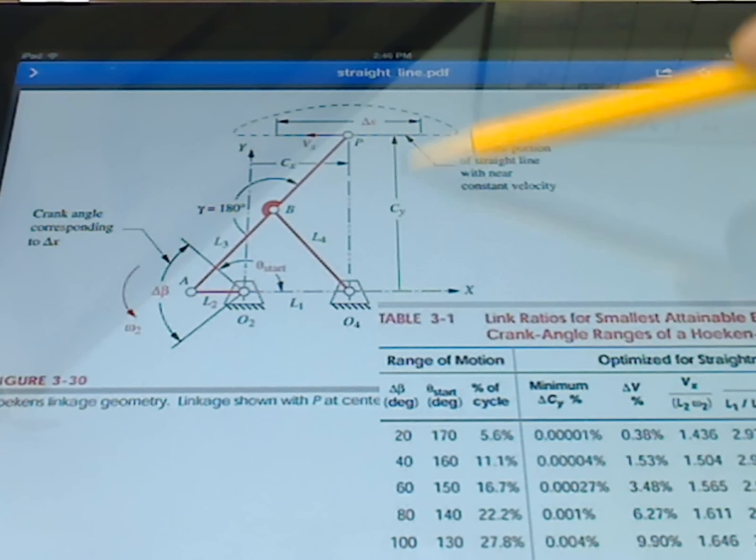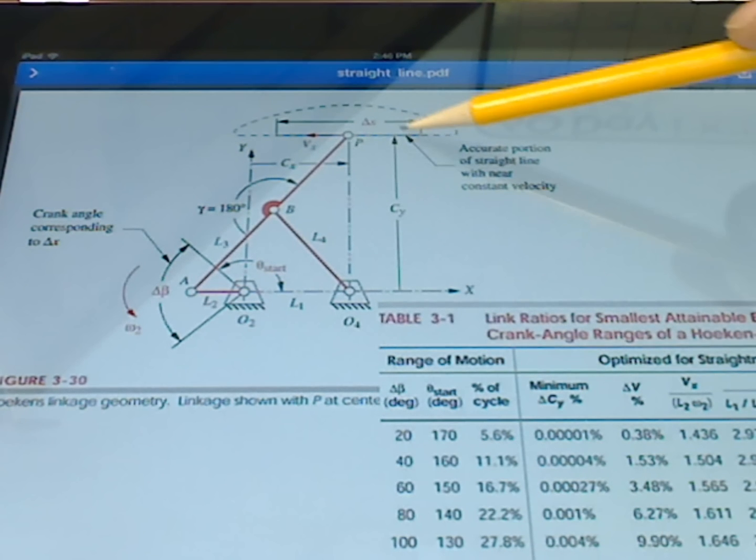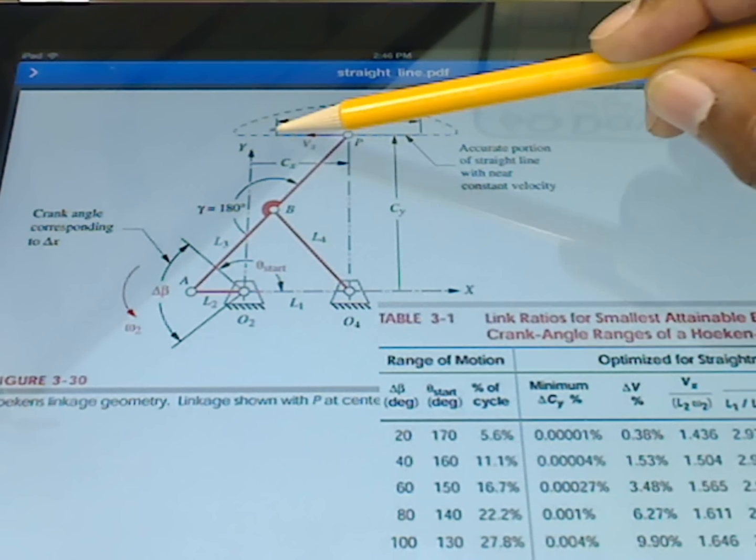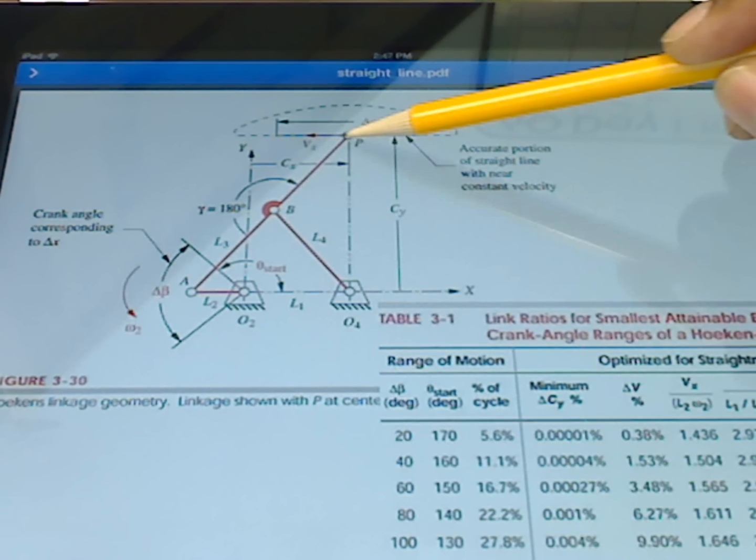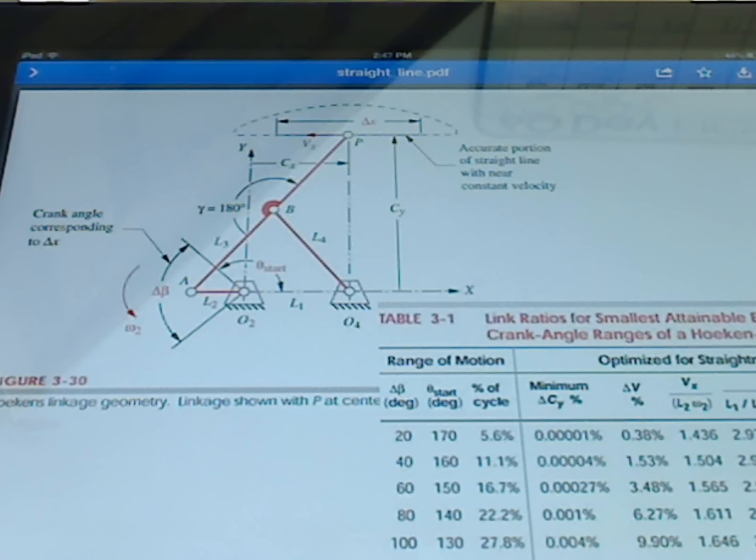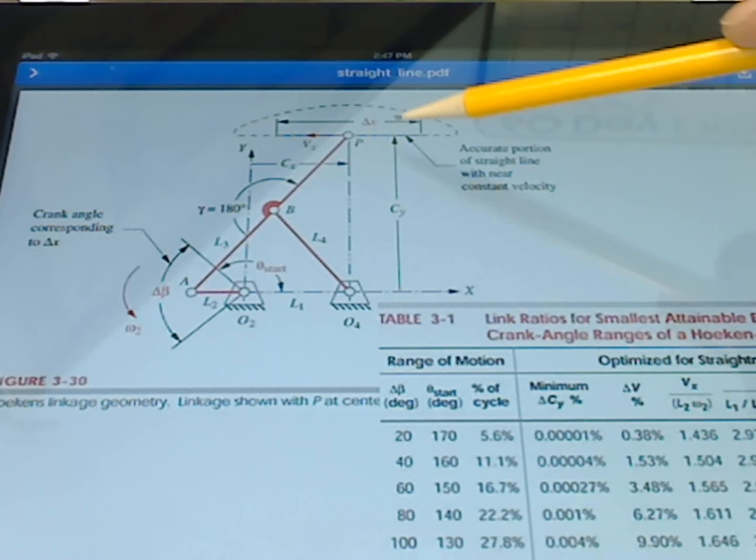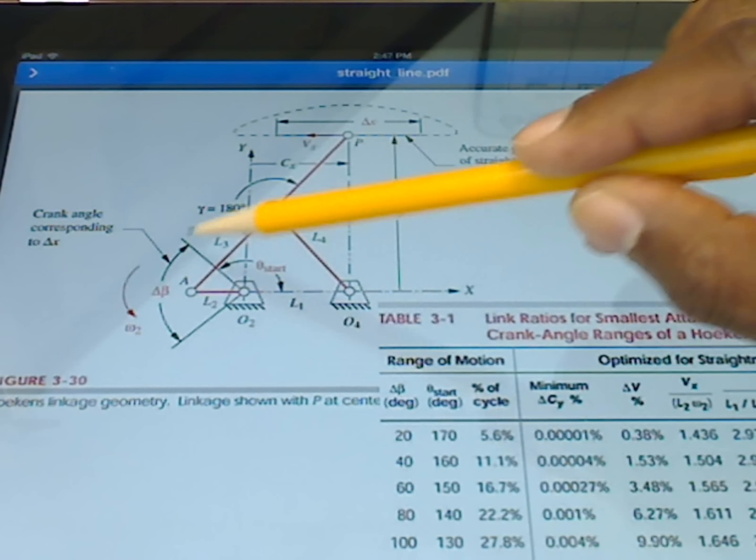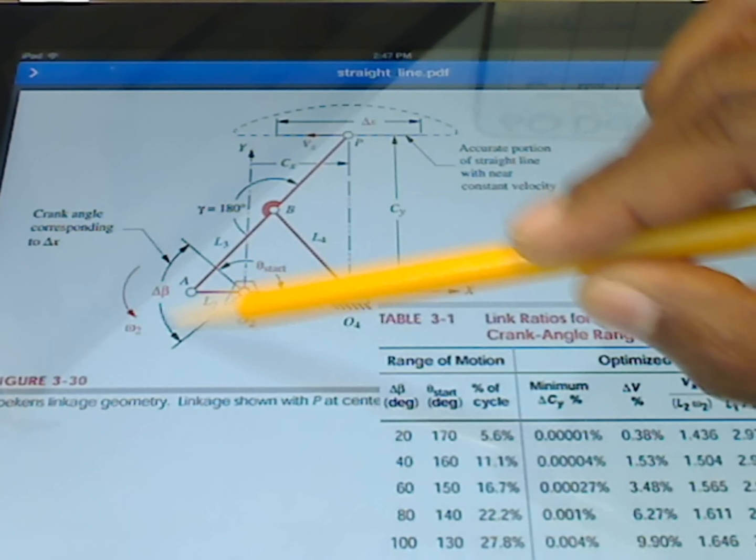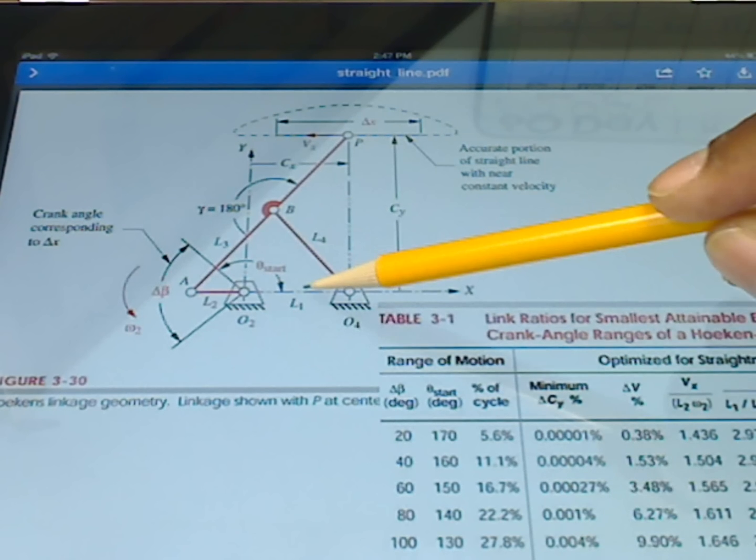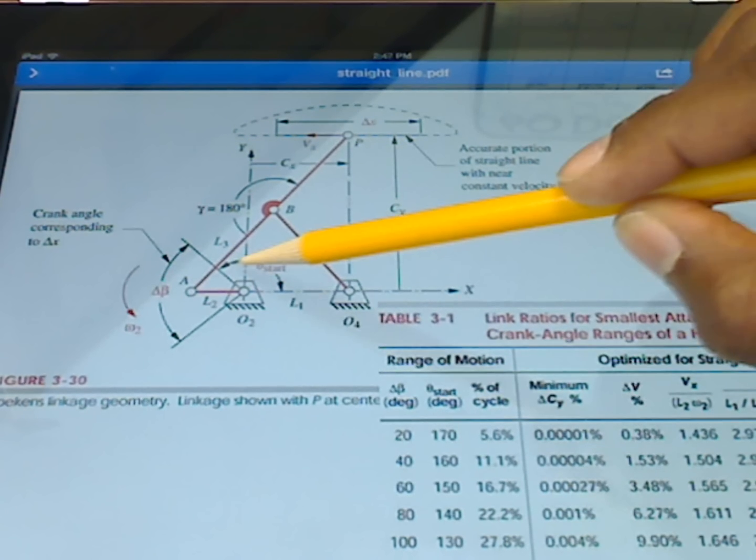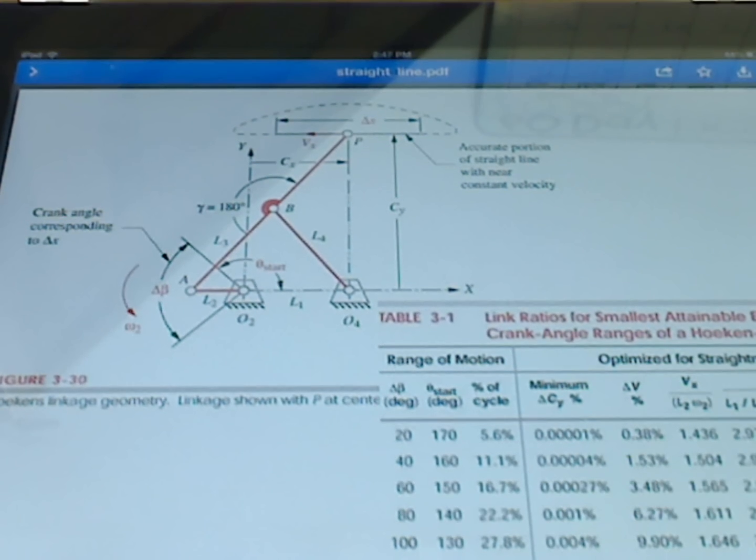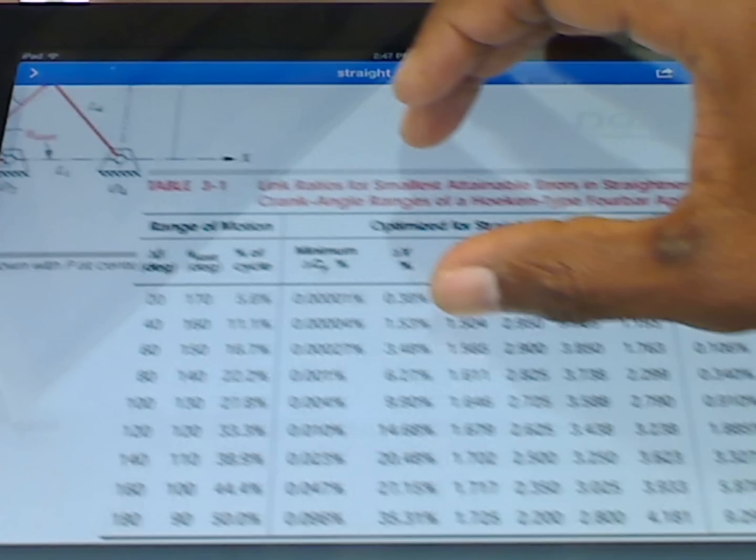We are also going to talk about how straight this line is. In other words, how much does the point P waver from this line? And how does the velocity, how constant does the velocity stay as we proceed along this path? We can design so that we get one or the other. We can also design to change the amount of the straight portion and where the straight portion starts. And that's where we talk about this theta start angle here. And so let's look at that table.